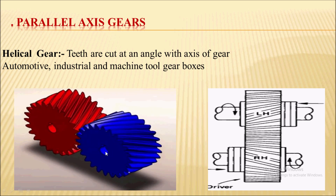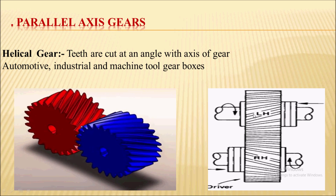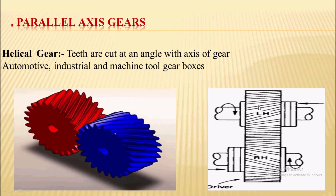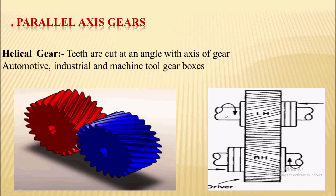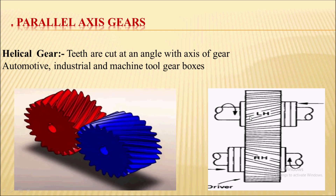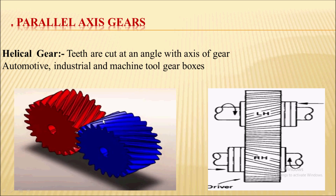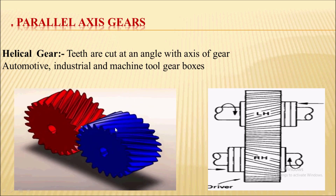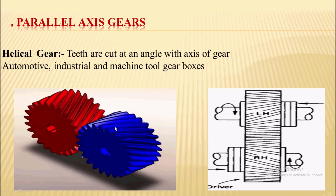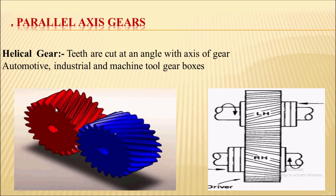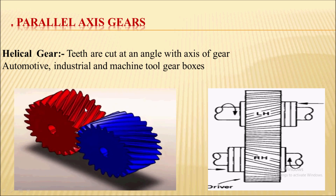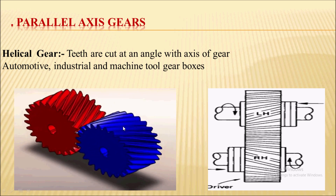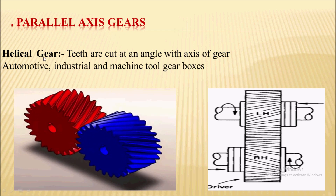The next parallel axis gear is the helical gear. Helical gear is used to transmit power between two parallel axis shafts. The teeth are cut at some angle to the axis of the gear — that angle is called the helix angle. The helix angle of the two mating helical gears is the same in magnitude but of opposite hand, meaning a left-hand helix gear will mesh with a right-hand helix gear.